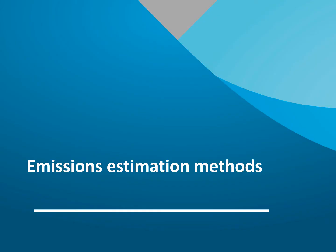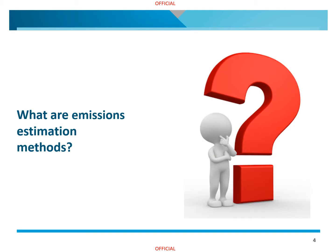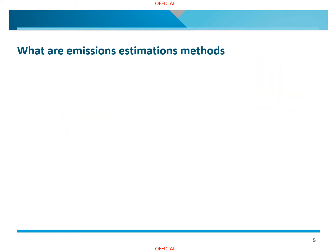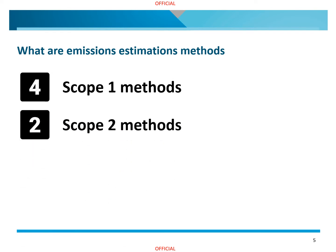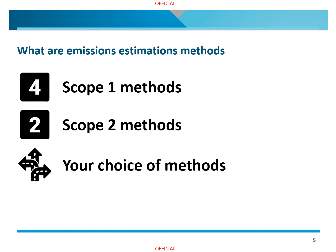In the first part of the video, we describe the methods that are available for estimating direct and indirect greenhouse gas emissions under the determination. Emissions are rarely measured through direct observation. They are most often estimated by referencing readily observable variables that are closely related to greenhouse gas emissions, such as the quantity of fossil fuels consumed. In the determination, there are four methods available for estimating scope 1 emissions and two methods available for estimating scope 2 emissions. Reporters can choose which of these methods they will use, noting that not all methods are available for all sources of emissions.